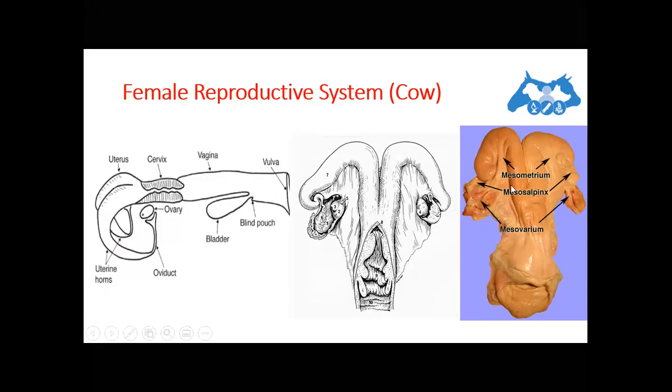The upper one is mesometrium, and the medium one in between the upper and the lower suspensory ligaments is mesosalpinx. And the lower one, lower suspensory ligaments which are known as mesovarium, which actually the suspensory ligaments which help in the suspension of the ovary.